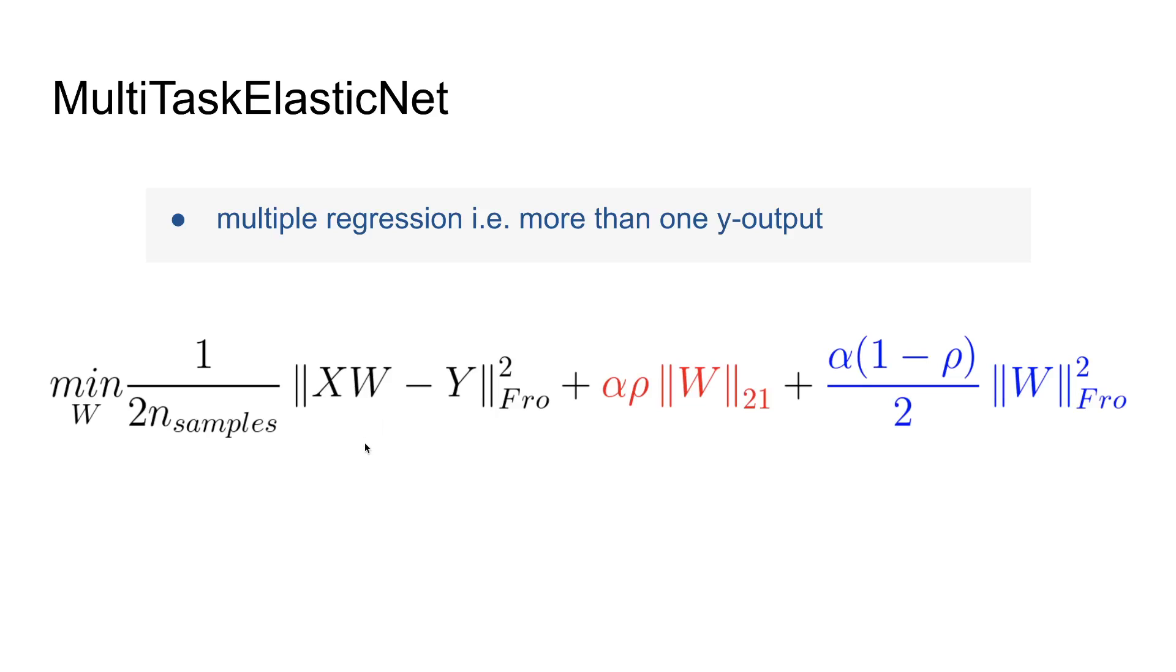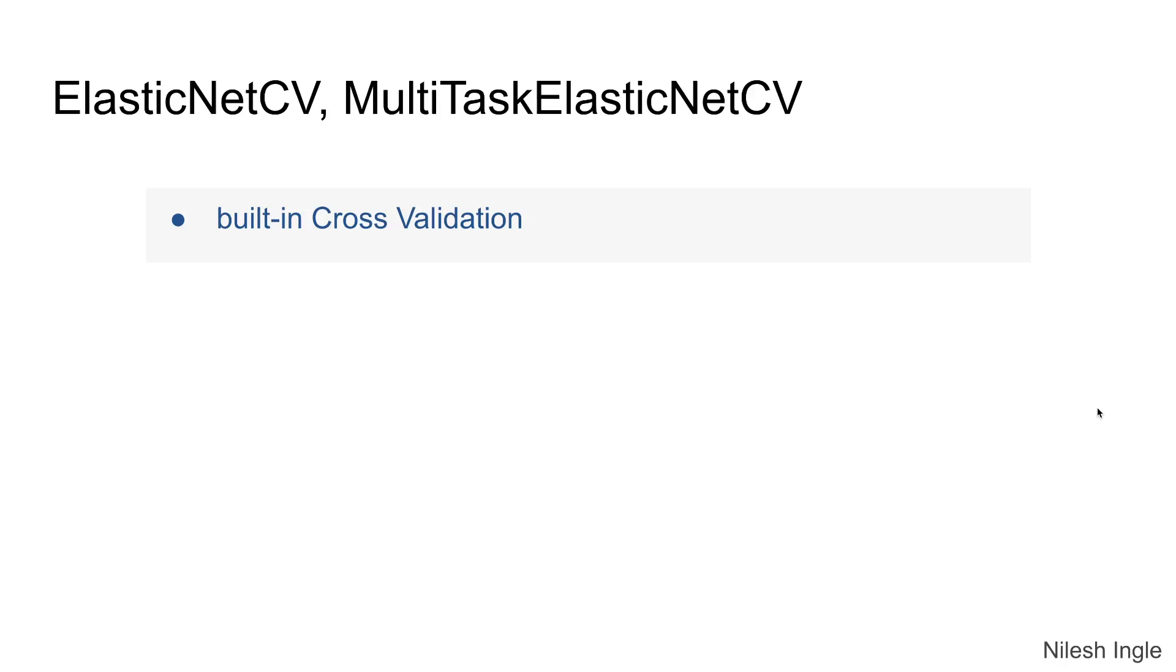The rest of the equation stays the same. Here this has changed to the Frobenius norm because when we are talking about matrix, the L2 norm changes to the Frobenius norm. So that's why we have the abbreviation here as Fro.